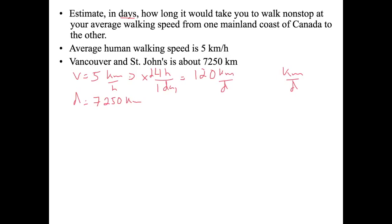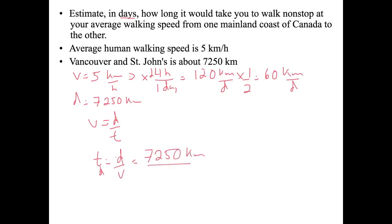However, walking 24 hours straight isn't reasonable, so let's say 12 of the 24 hours in a day, multiplying by one-half gives approximately 60 kilometers per day. Using v equals d over t, rearranged to t equals d over v: distance is 7,250 kilometers divided by 60 kilometers per day. Kilometers cancel and we get 7,250 divided by 60.